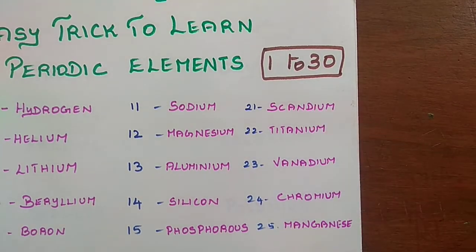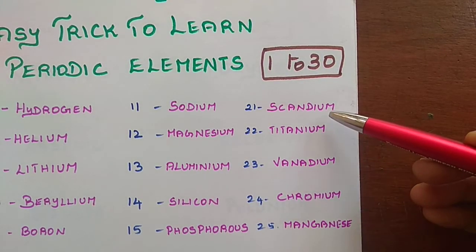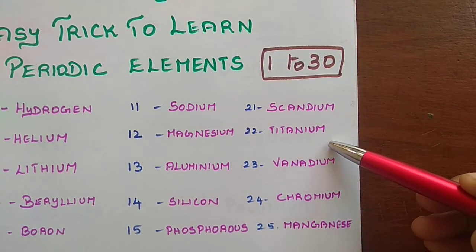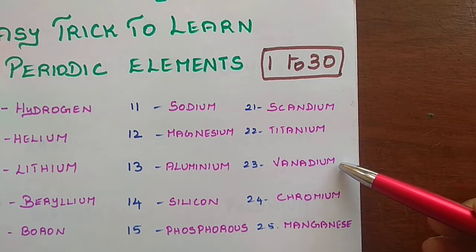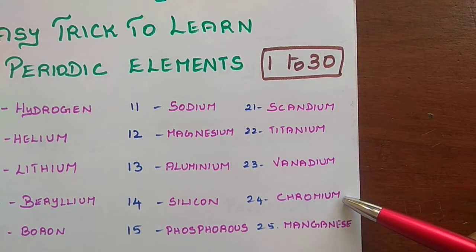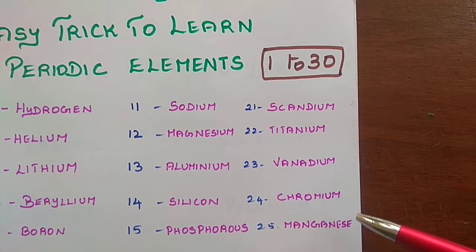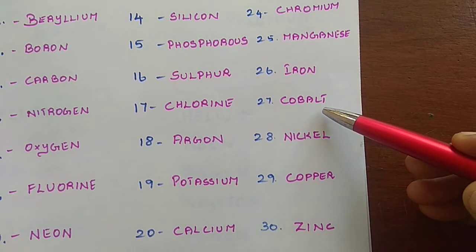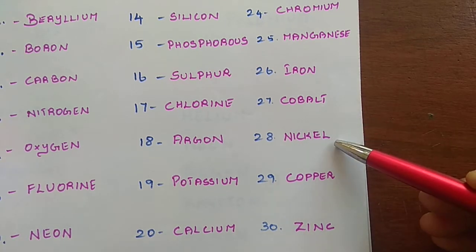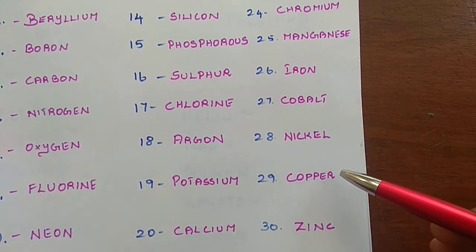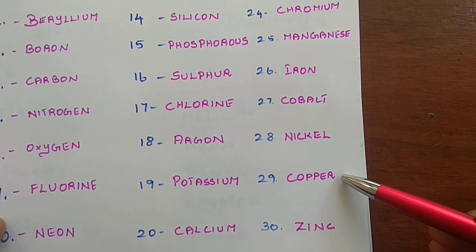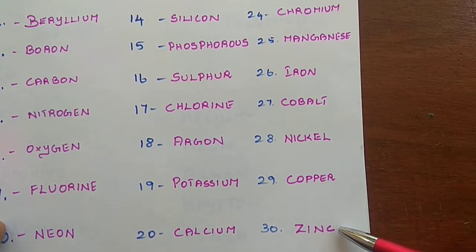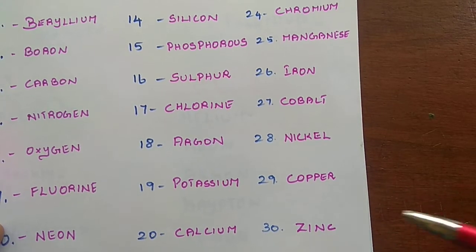Now elements 21 to 30: Scandium, Titanium, Vanadium, Chromium, Manganese, Iron, Cobalt, Nickel, Copper, Zinc.